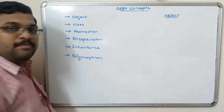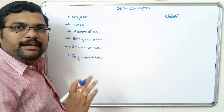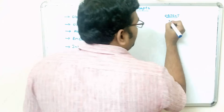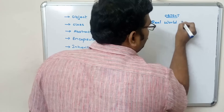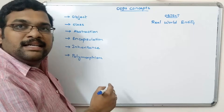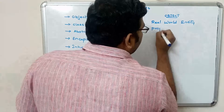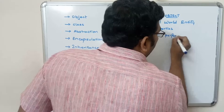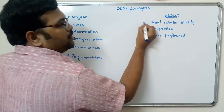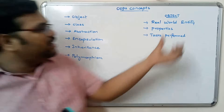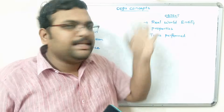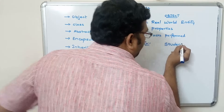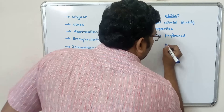What is meant by object? An object is defined as a real world entity. Whatever thing we are seeing in the real world can be treated as an object. This object is a real world entity, and it consists of properties and tasks performed by it. Whatever real world entity which has these properties and tasks to perform, we call that an object.